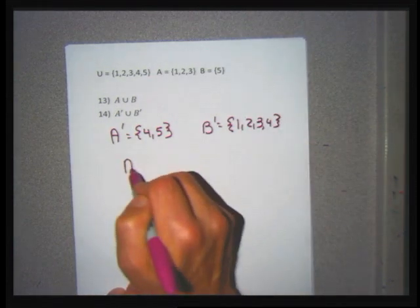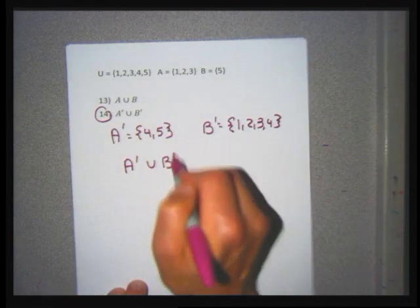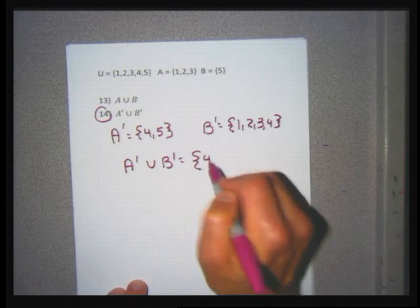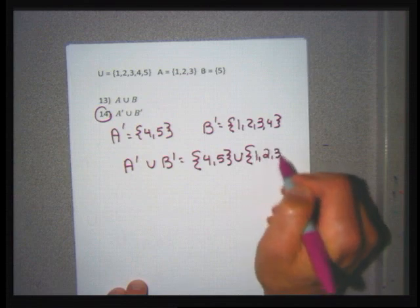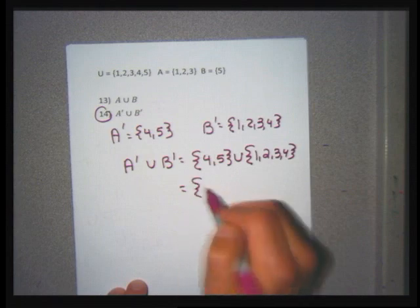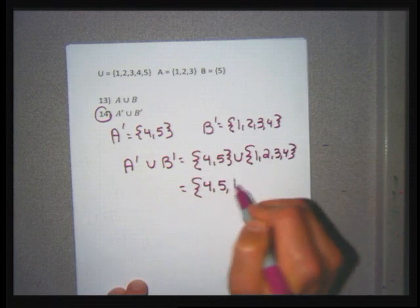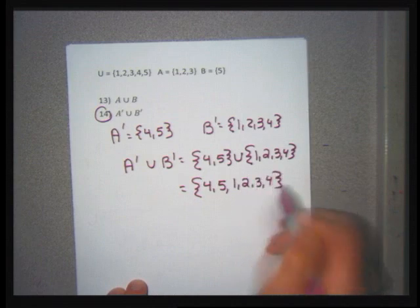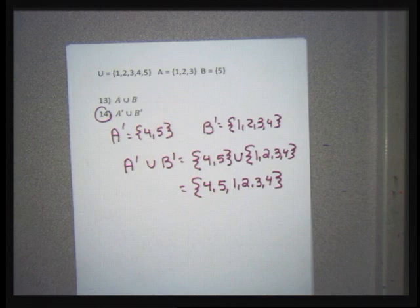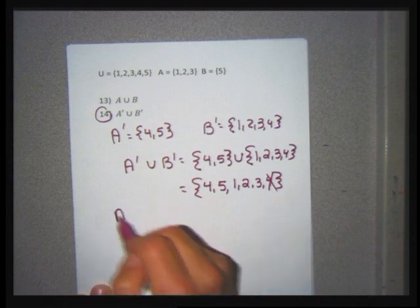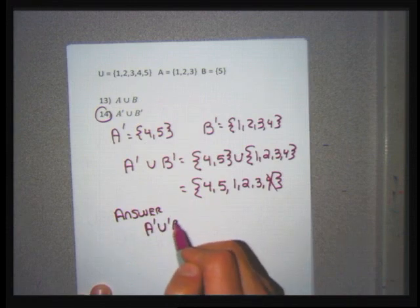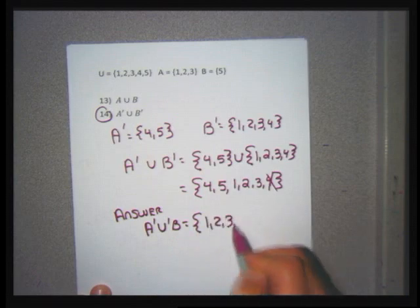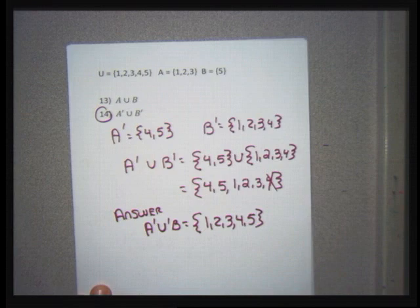For problem 14, I need A complement union B complement. A complement is {4, 5} because A has 1, 2, 3. B complement is {1, 2, 3, 4}. For A complement union B complement, I put the sets together: {4, 5} union {1, 2, 3, 4}. Remove the duplicate 4 and write in nice order. A' union B' = {1, 2, 3, 4, 5} — which is all of everything in U.